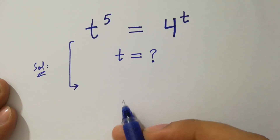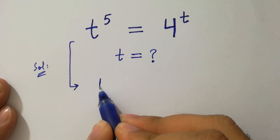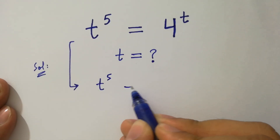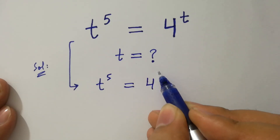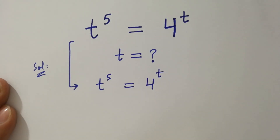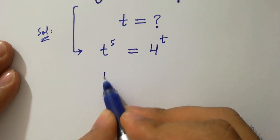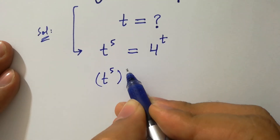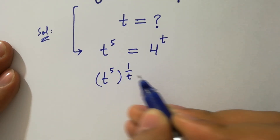So we have the question here: t to the power 5 equals 4 to the power t. To solve this, take the power 1 over t on both sides.